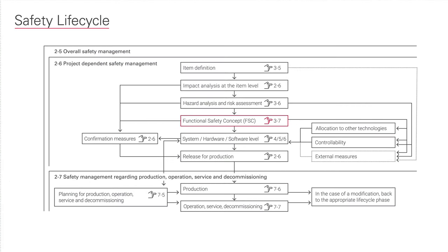Let's take a look at the safety life cycle. After hazard analysis and risk assessment, the functional safety concept is the next logical step in controlling faults in the electronic systems of road vehicles. This is because it defines what needs to be done to achieve safety goals on the vehicle architecture level.